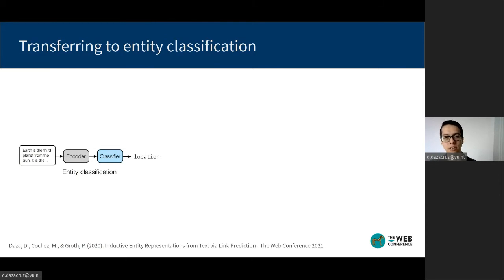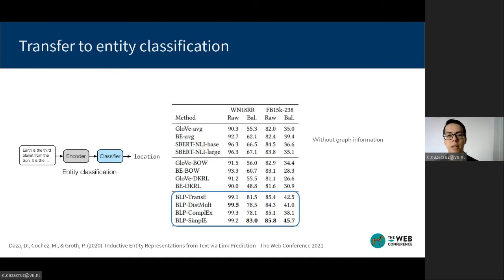We take the encoders trained for link prediction and freeze their parameters, and then use their output as features for a classifier of the type of an entity. We compare with methods not explicitly trained for link prediction, such as taking the average of word embeddings.